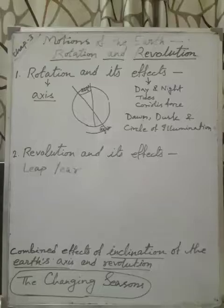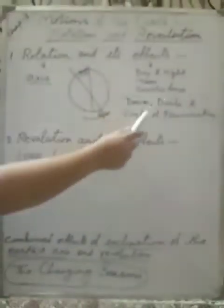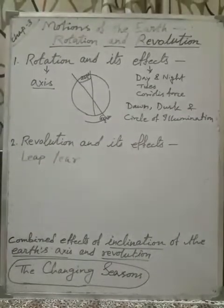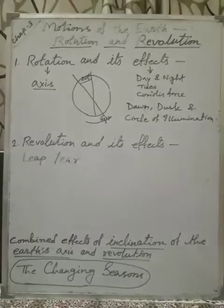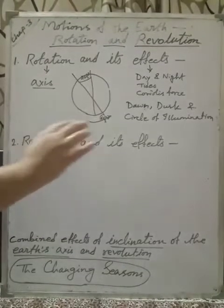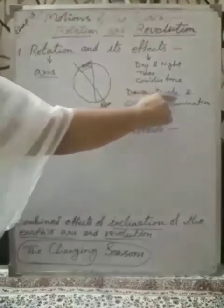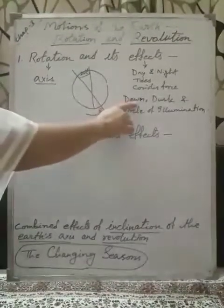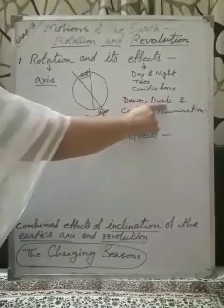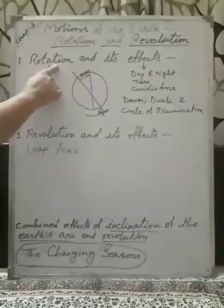These three situations also develop like day and night. What are the meaning of these three? Dawn, dusk and circle of illumination. Actually, dawn and dusk, these two are the transitional period between day and night. We can see these two situations before sunrise, dawn and after sunset, dusk. Means, light is still there. Before appearing sun, we can see the light. And after sunset, we can see the light. These two situations develop due to rotation.